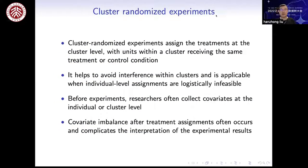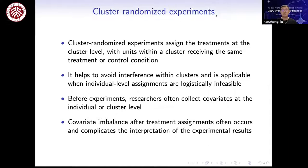Cluster randomized experiments are widely used in public health and social science. Treatment is assigned at the cluster level, with units within a cluster receiving the same treatment or control condition, which can help avoid interference within clusters and is applicable when individual-level assignment is infeasible. Before the experiment, researchers often collect covariates at the individual level or cluster level. For example, in clinical trials, individual-level covariates may include gender, age, and education of patients, while cluster-level covariates may include the capacity and location of the clinics. Cluster randomization can balance covariates on average; however, the probability of having imbalance after treatment assignment can be very large, complicating the interpretation of results, especially if some covariates are predictive of the outcome.